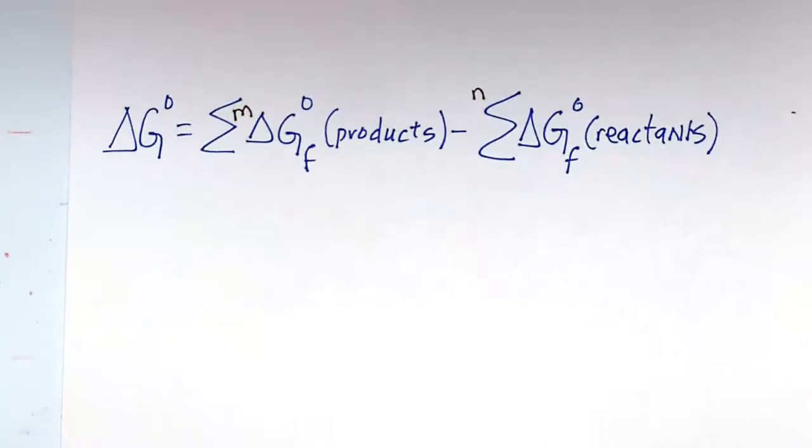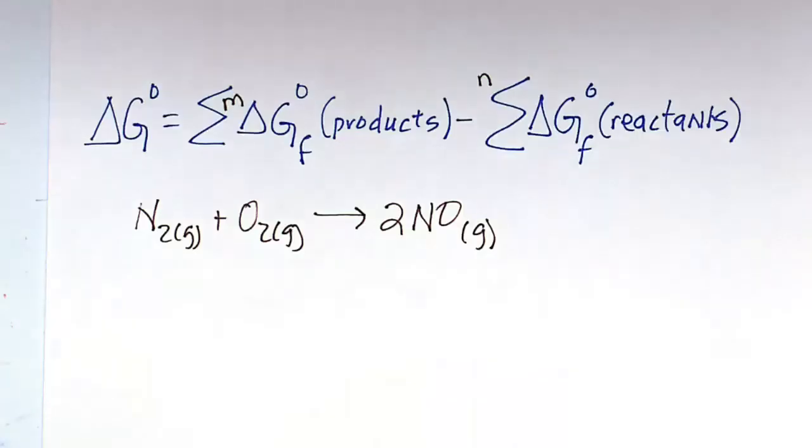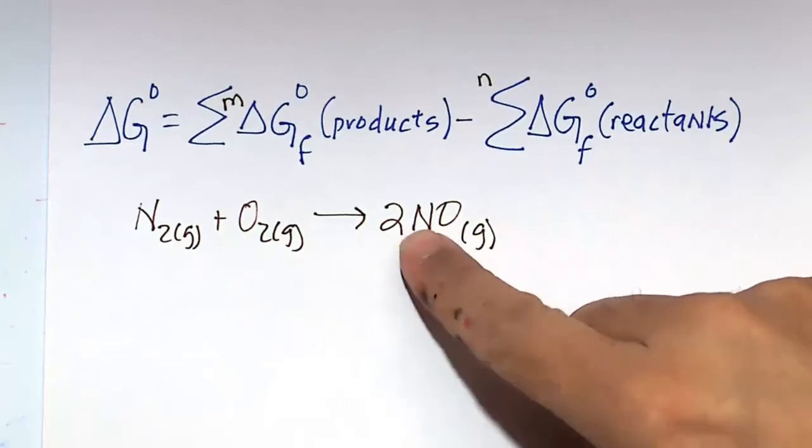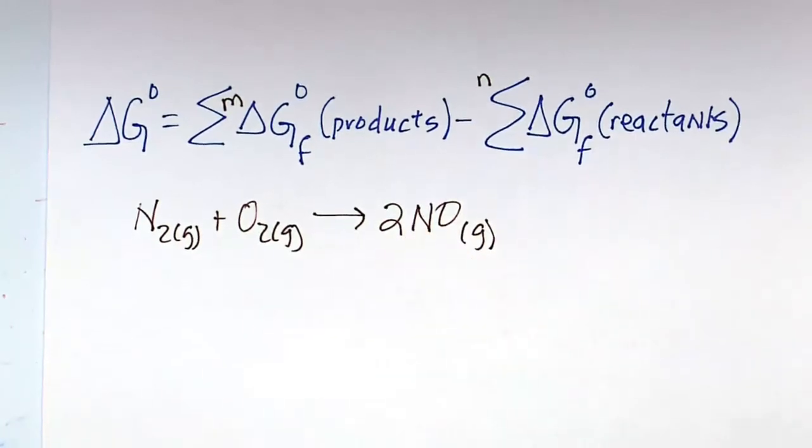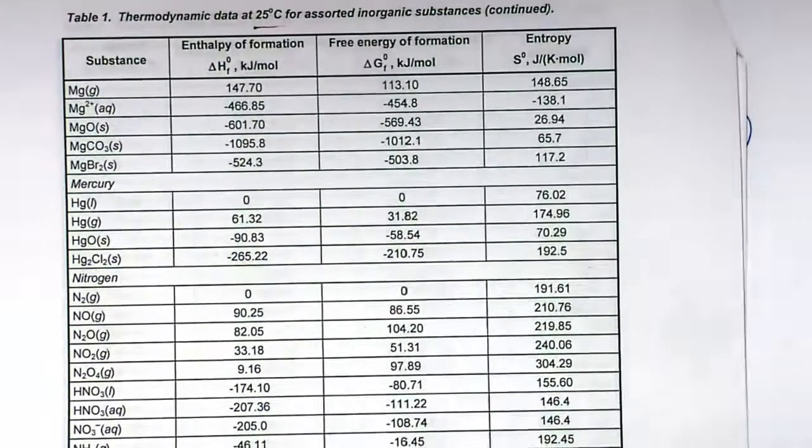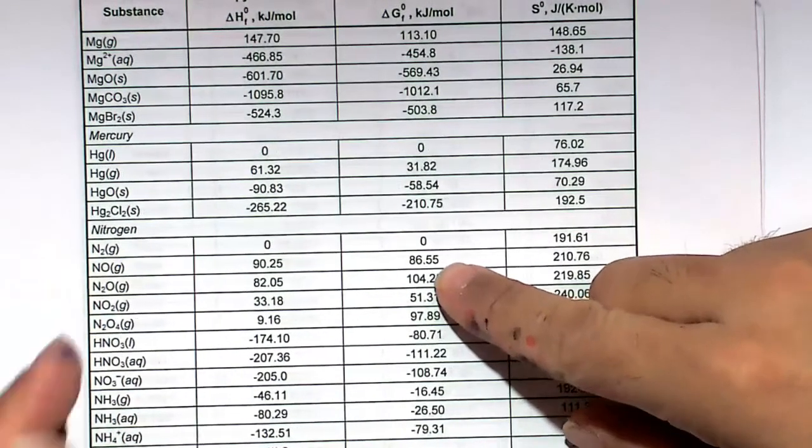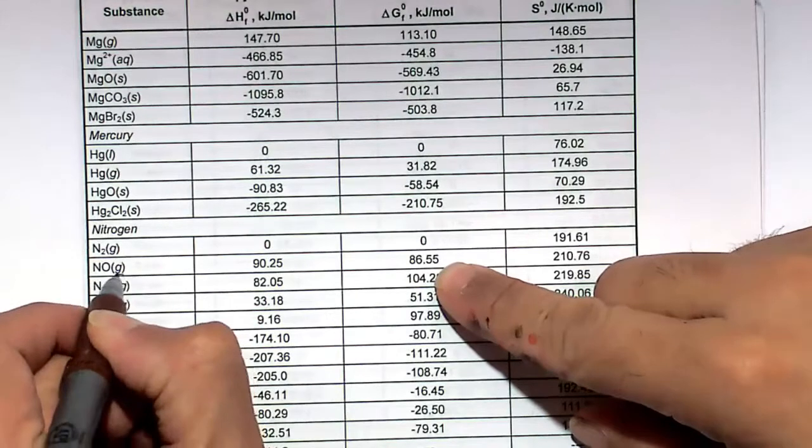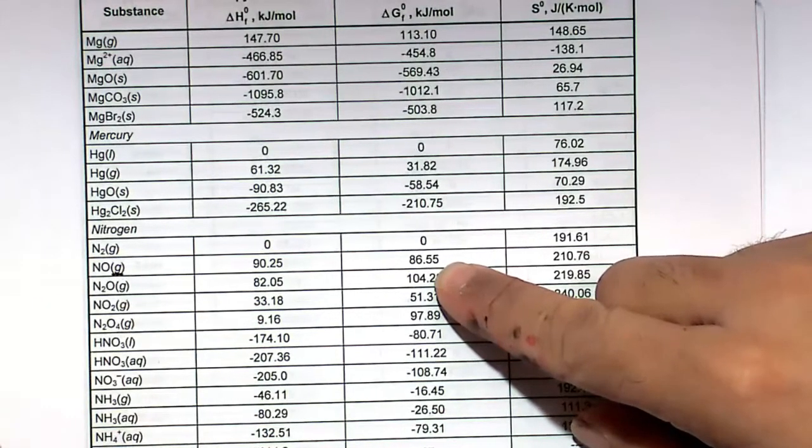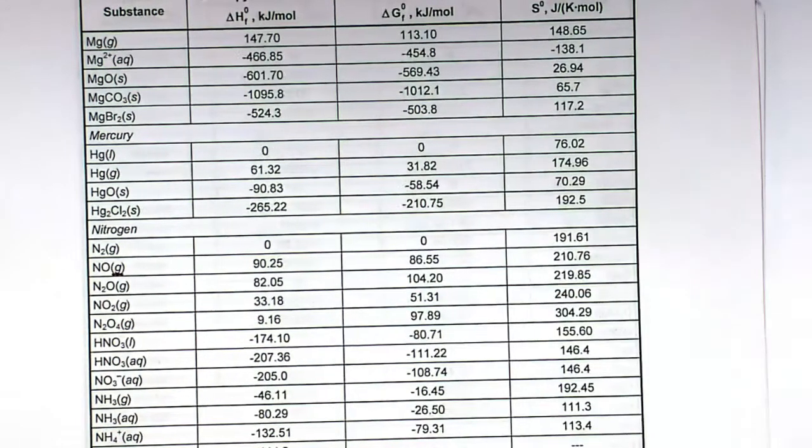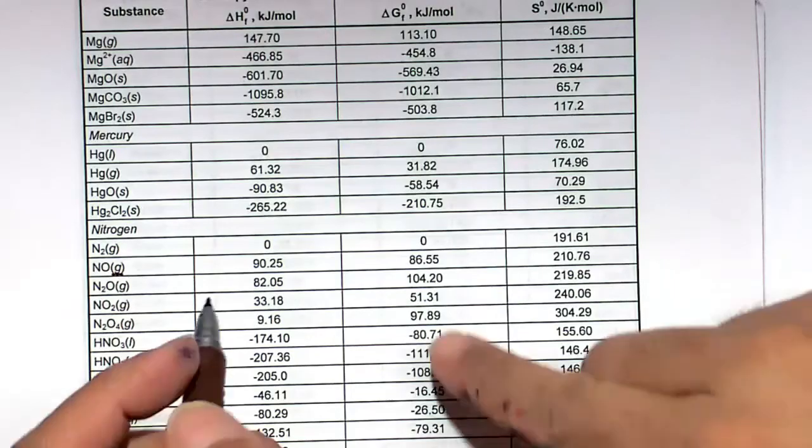Going back to our equation, we have N2. It's sum of the products minus sum of the reactants. We have one product, we'll multiply that value by 2. We're going to look up our delta Gs and the delta G for NO gas. One thing is states matter, okay? So you'll want the NO for gas. A lot of these will be solids, liquids, or gases, so you want to make sure you have the right states.